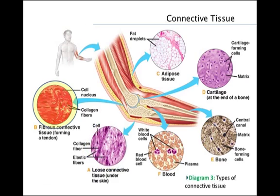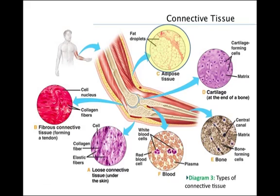Fibrous connective tissue forms tendons, which attach muscles to bone, and ligaments, which join bones together. Adipose tissue stores fat in large, closely packed adipose cells. This tissue pads and insulates the body and stores energy.